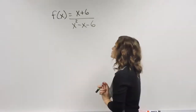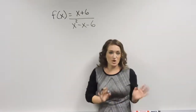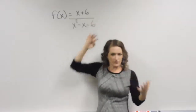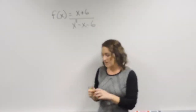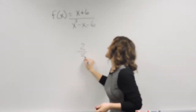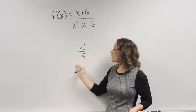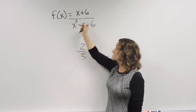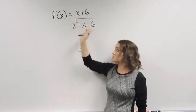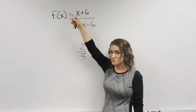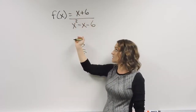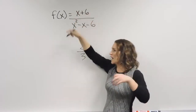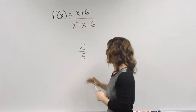If we're talking about rational expressions, we're talking about pretty much anything that can be written in fraction form. The only difference is that instead of having a regular fraction like maybe two thirds, we're dealing with fractions where you have a polynomial in the numerator and denominator — binomials, trinomials, maybe something even more.